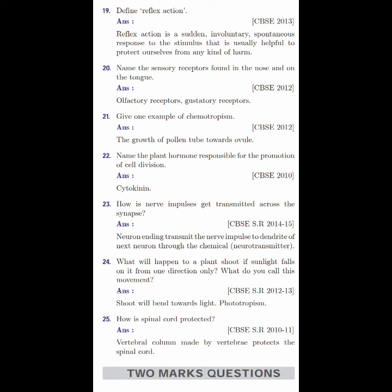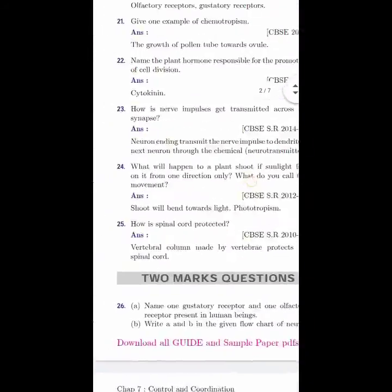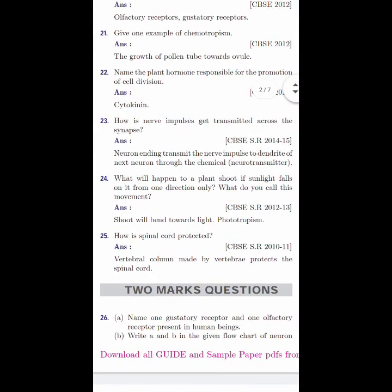How is spinal cord protected? Vertebral column made by vertebrae protects the spinal cord. Vertebral column which is made up of vertebrae will protect the spinal cord. The protective layer is vertebrae. These are one mark questions. So let us take up two mark questions in the next video.